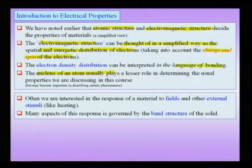In the common language we call the language of bonding, this electron density distribution is interpreted as a kind of bonding. If the electron density distribution is high between two atoms, we call it a covalent bond. If the electron density distribution is shifted towards one atom, we call it the ionic bond. And if the electron density distribution is delocalized — meaning the electron belongs to the whole solid and not to a particular atom — we call such bonding as metallic bonding.